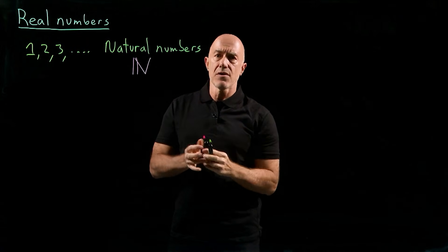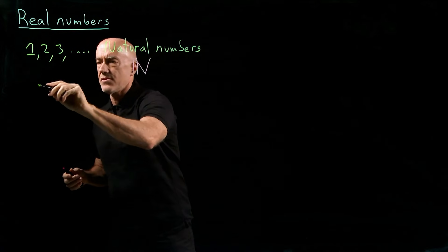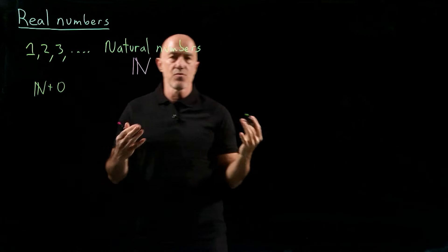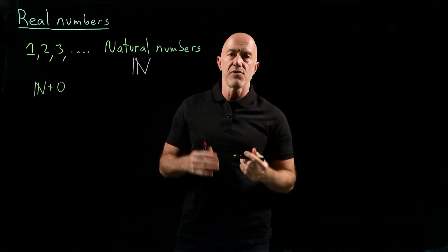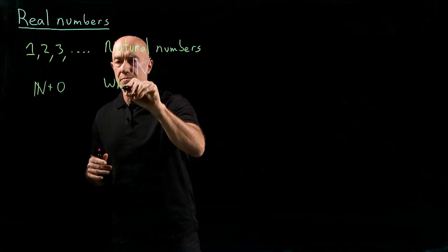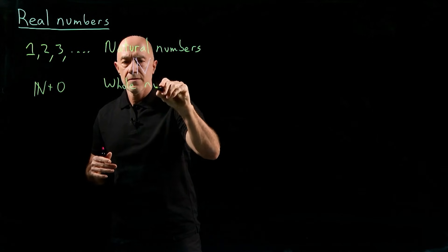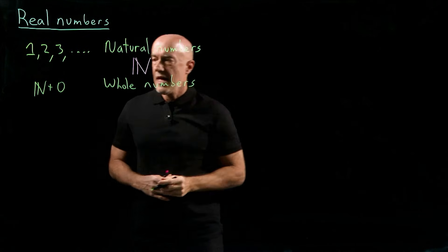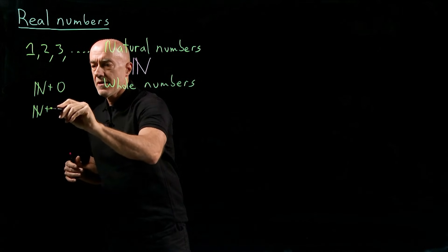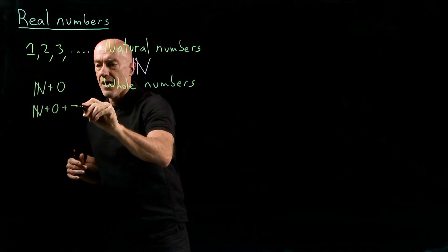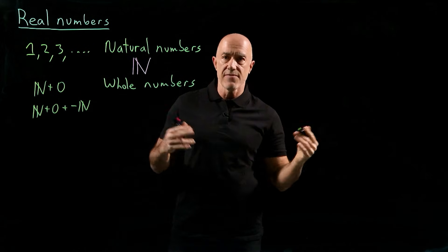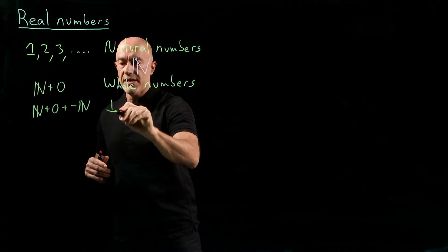If we add 0 to the natural numbers — 0 was a very important discovery in mathematics — we get what's called the whole numbers. And then if we add to the whole numbers the negative of the natural numbers, we get a larger set of numbers, which are called the integers.